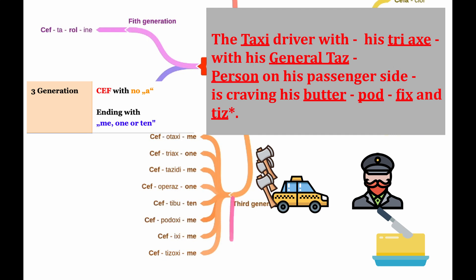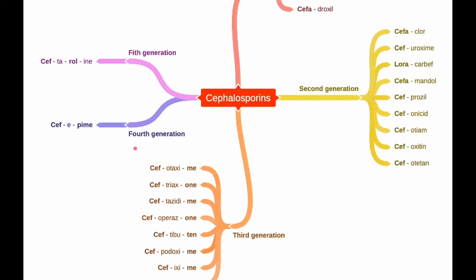For the fourth generation, the rule is 'cef' in the beginning and the word is ending with '-pime'. Since it's just only one drug, it's really easy. You can remember cef with General Pime, General Pime.